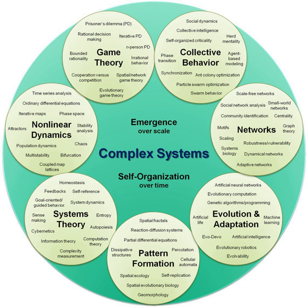Macrosystem — a larger system that influences clients, such as policies, administration of entitlement programs, and culture. Chronosystem — a system composed of significant life events that can affect adaptation.